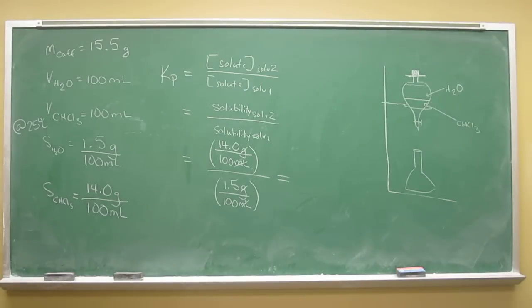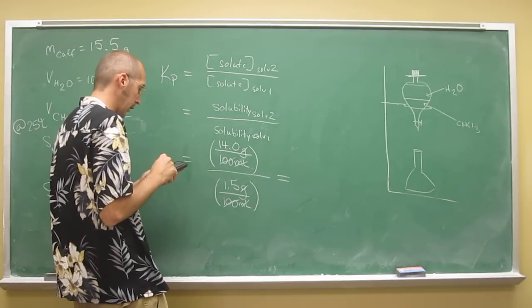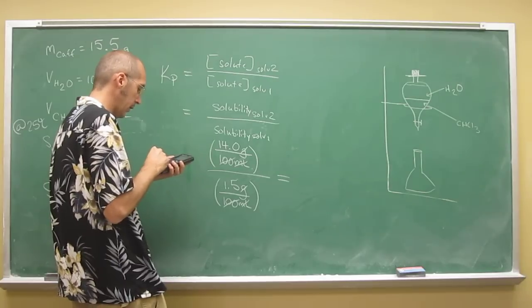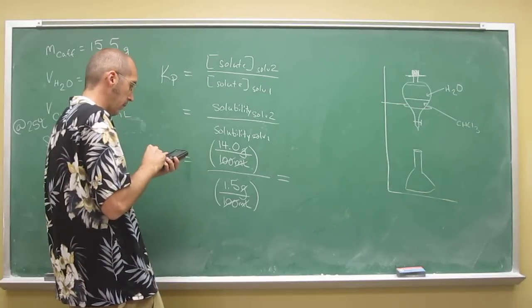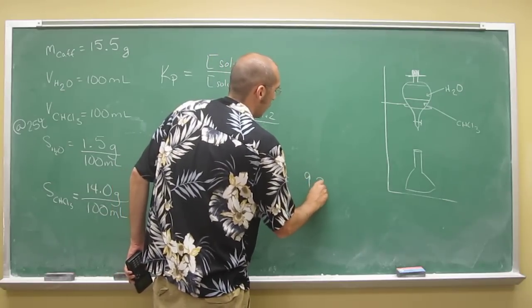All we've got to do now—100 divided by 100 will cancel and that'll give us one. So 14 divided by 1.5 is 9.33.